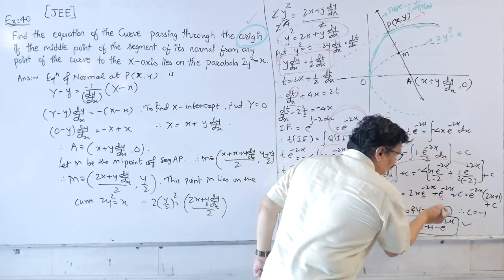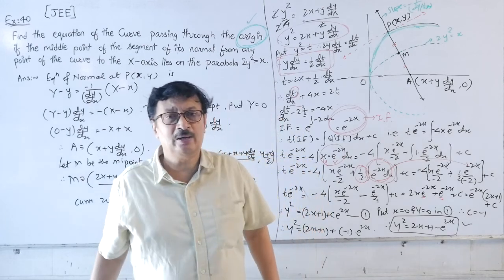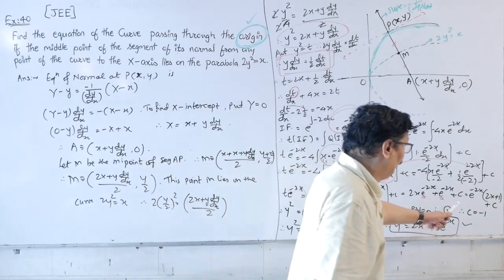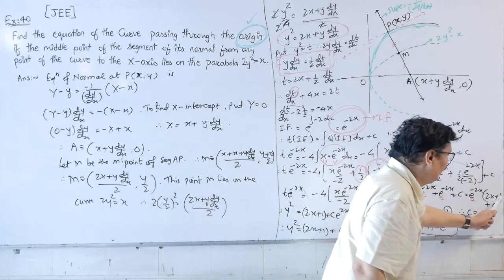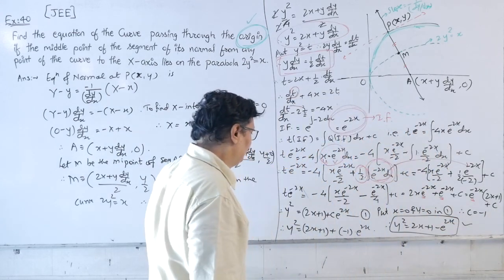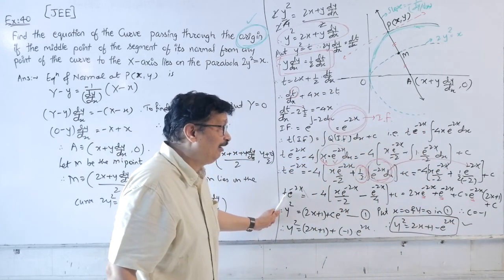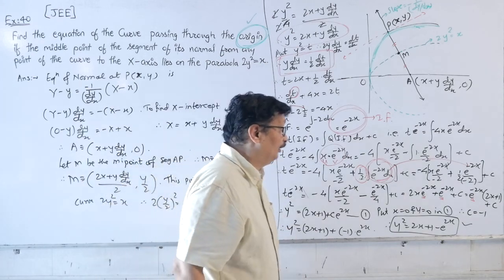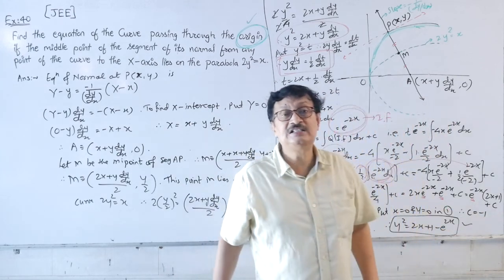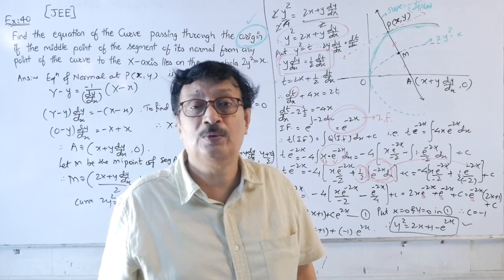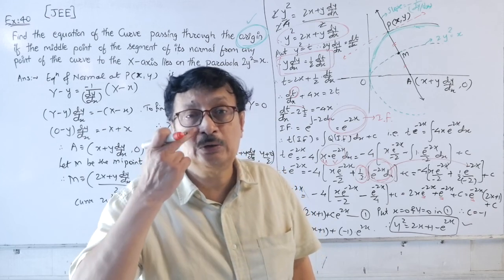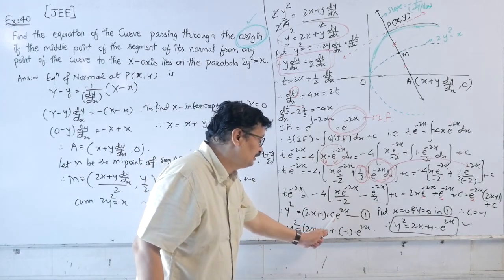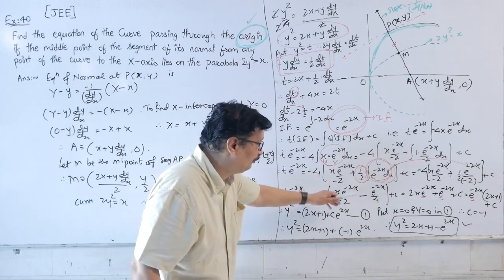Dividing both sides by e^(−2x): t = 2x + 1 + c·e^(2x). Since t = y², we get y² = 2x + 1 + c·e^(2x) as the general solution.